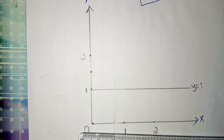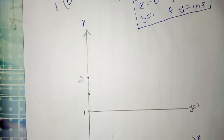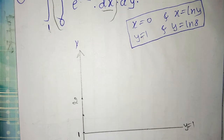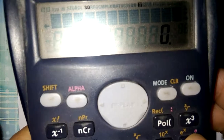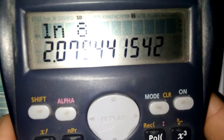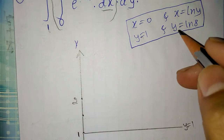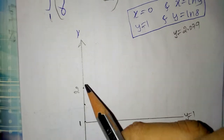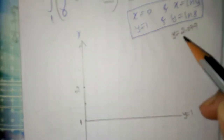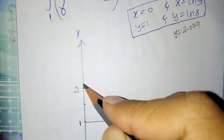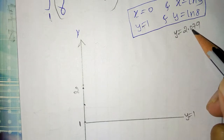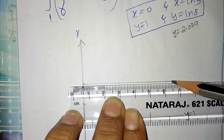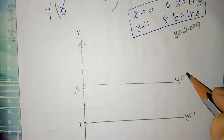Now, they give y is equal to ln(8). What is the value of ln(8)? We check using a scientific calculator: ln(8) is equal to 2.079. So this equation becomes y is equal to 2.079. At approximately 2 on the y-axis, we write 2.079 and draw a line parallel to the x-axis. This becomes the line y is equal to ln(8).